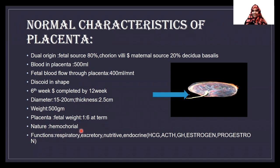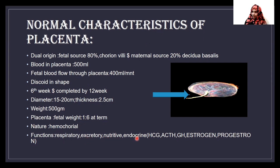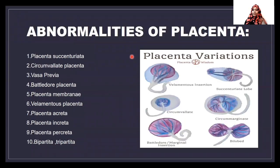The nature of placenta is hemochorial, meaning it has blood supplies as well as membranes. The main functions of the placenta include respiration — oxygen supply to the fetus; excretion — removing waste materials; nutritive — giving nutrition; and endocrine functions by releasing HCG, ACTH, GH, estrogen, and progesterone hormones.